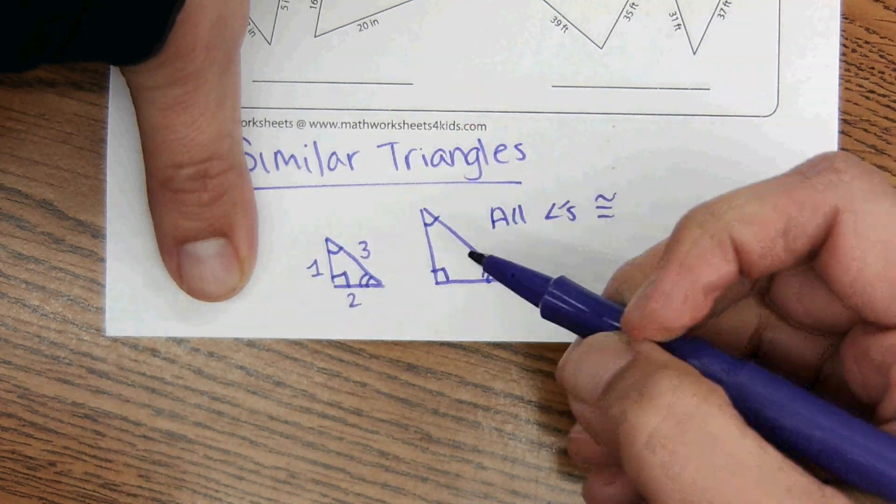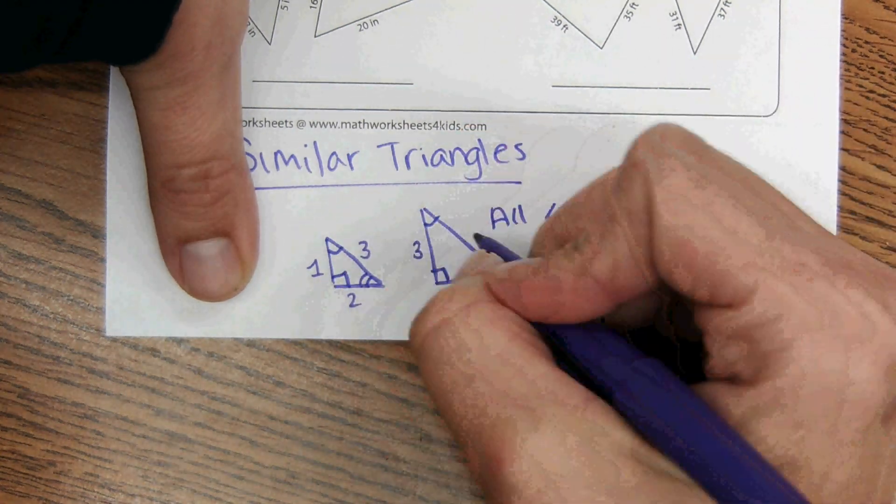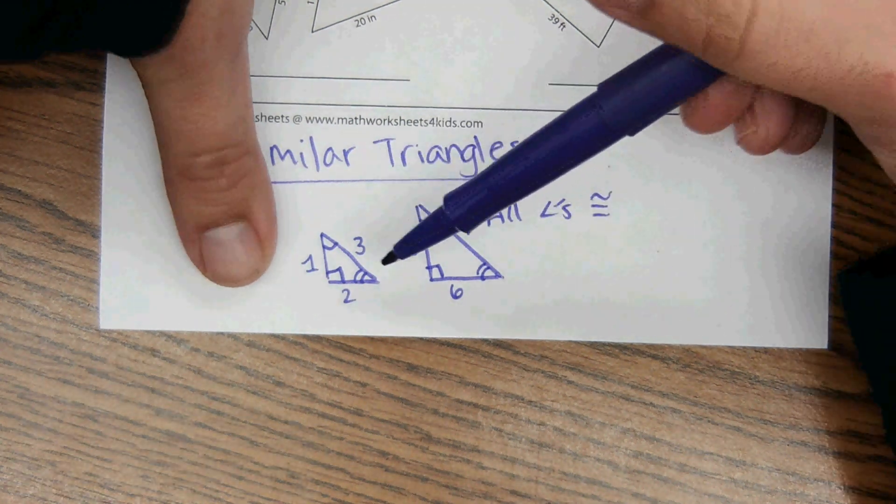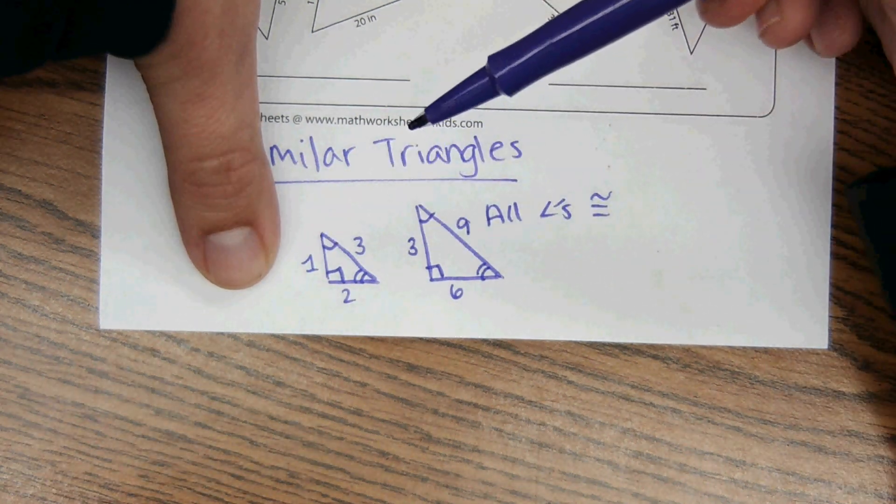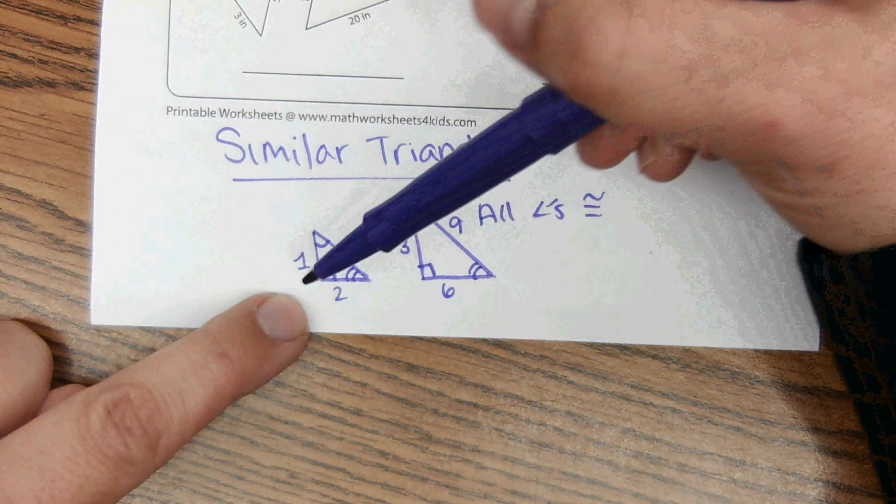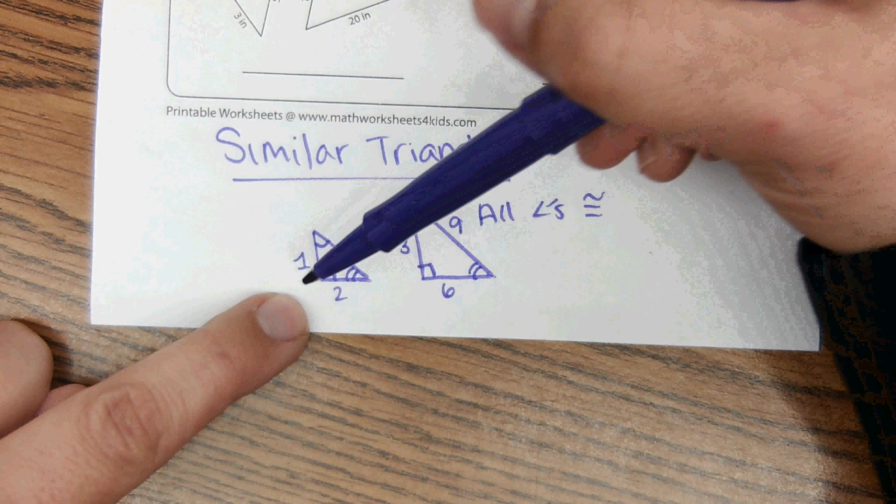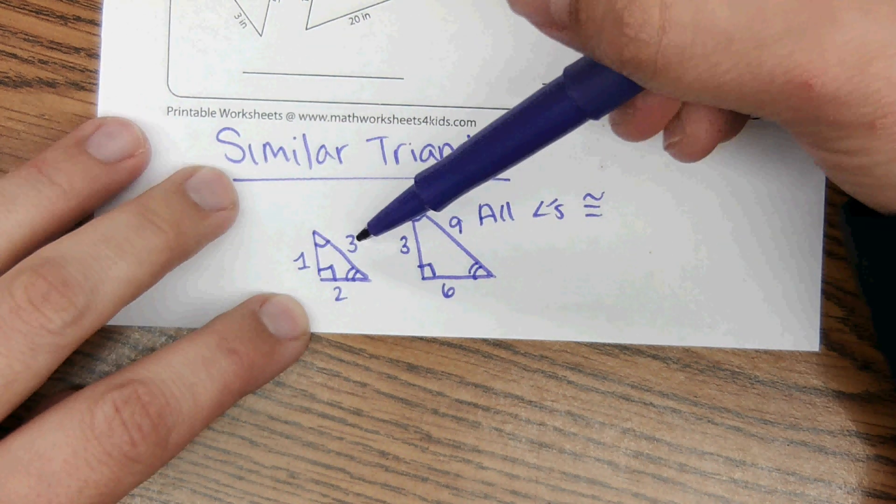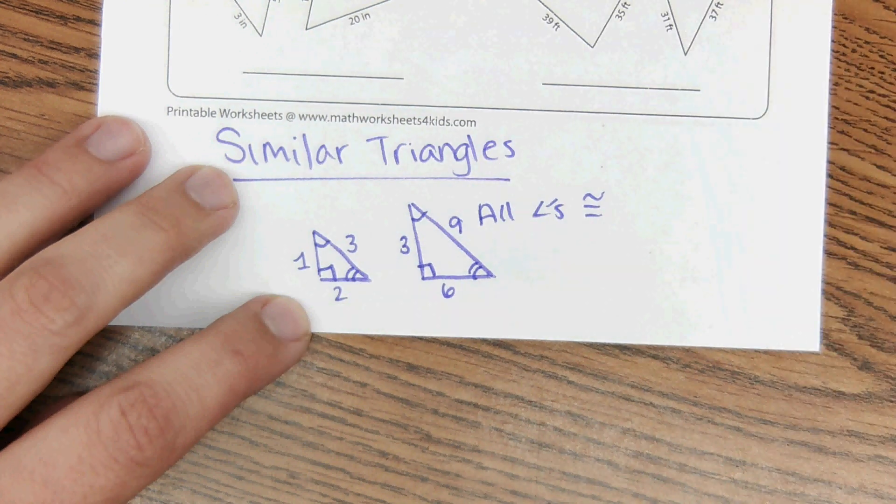And then the side lengths are proportional. So if this is like one unit, two units, and three units, this might be three, six, and nine. So similar triangles have to be proportional, meaning that they have to be related through a scale factor or multiplication or division. So like one times three is three, three times three is nine, and two times three is six.